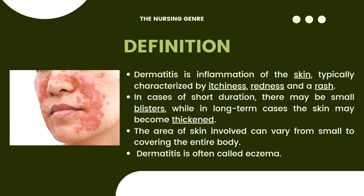Next, the definition. Dermatitis is the inflammation of the skin, typically characterized by itchiness, redness and rash. In cases of short duration, there may be small blisters, while in long-term cases the skin may become thickened. The area of skin involved can vary from small to covering the entire body. Dermatitis is often also called eczema.